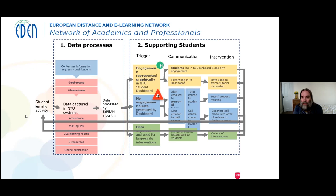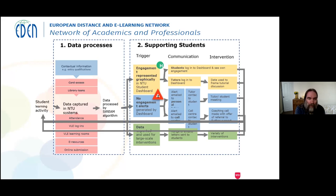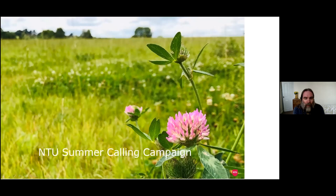I would argue there are two steps involved in how we use learning analytics to support students. The first is our data processes, and the second is the work we do around supporting our students. Using a model from one of our Erasmus projects, we start with a trigger — what leads to an intervention. Then we look at the communication — how do we get to those students. And finally, we look at the intervention itself. I'm going to focus on an activity we did in the summer of last year: the summer calling campaign.